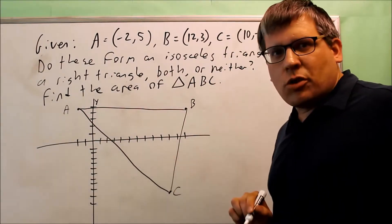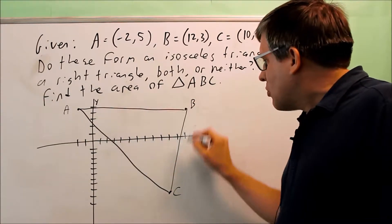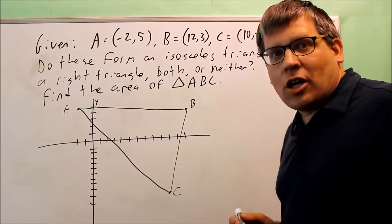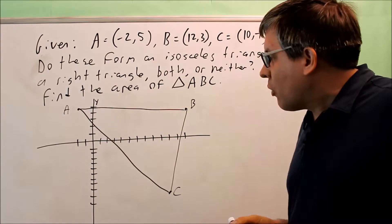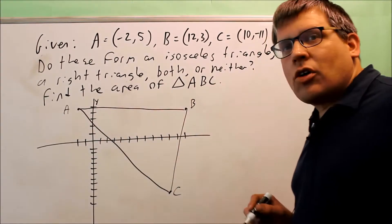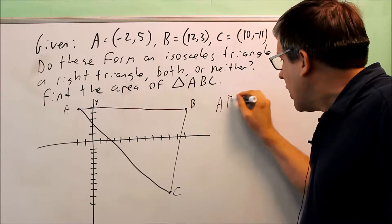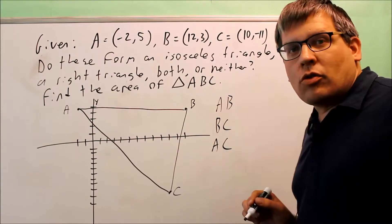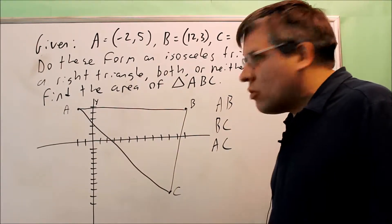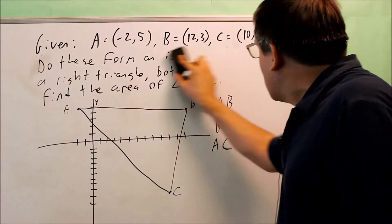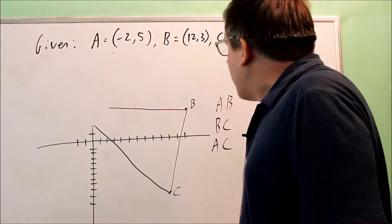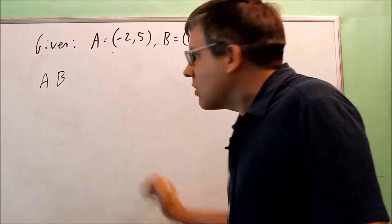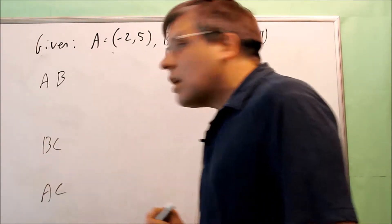I can't really tell too much about this just from the drawing. It kind of looks like this might be a right angle, but I don't know for sure, so I'm going to have to check it with math to confirm that — particularly using the distance formula. I want to find the distances of all three sides of the triangle: A to B, B to C, and A to C.